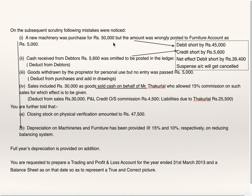A new machinery was purchased for 50,000 but the amount was wrongly posted to furniture account as 5,000. The purchase of machinery entry should have been: machinery account debit 50,000 to bank 50,000. But by mistake they debited furniture by 5,000 only. So the wrong entry passed was: furniture account debit 5,000 to bank 50,000. Bank has been correctly credited, but furniture account is wrongly debited and the amount is also wrong at 5,000. So debit is short by 45,000.